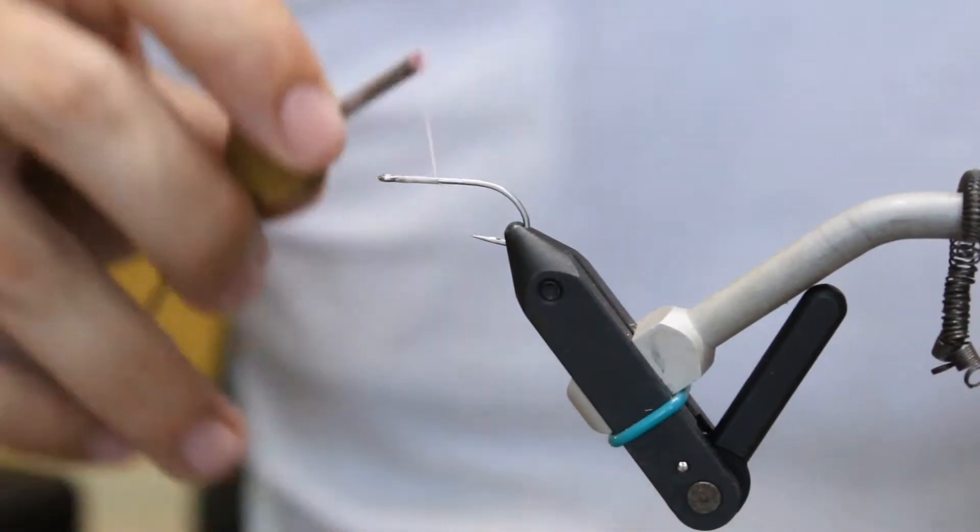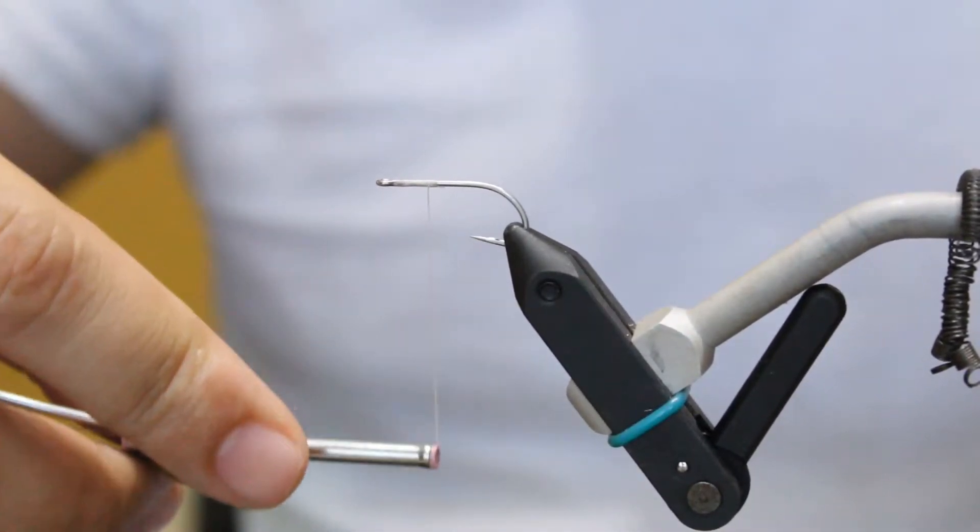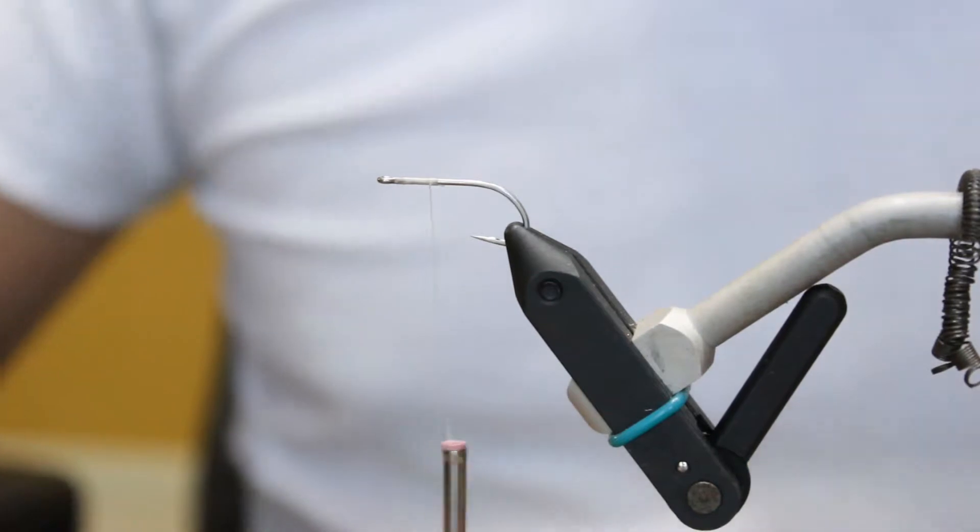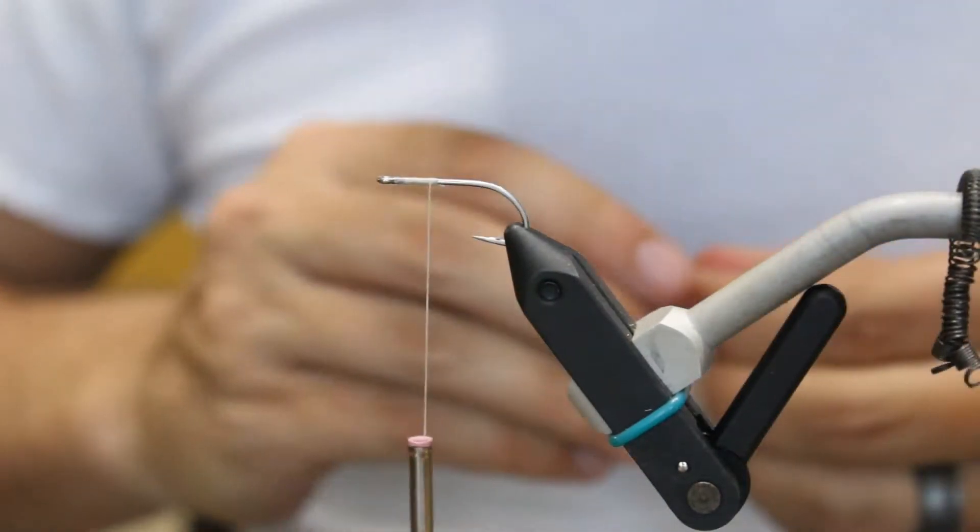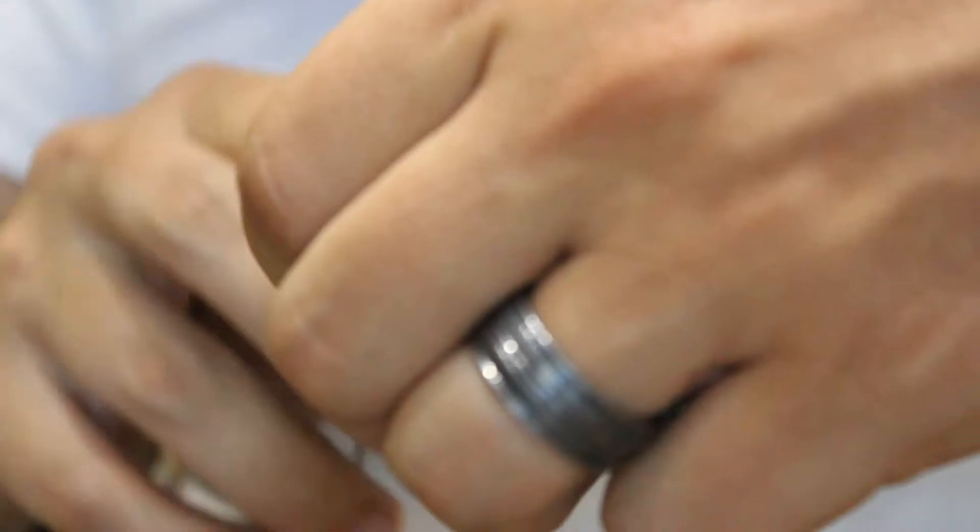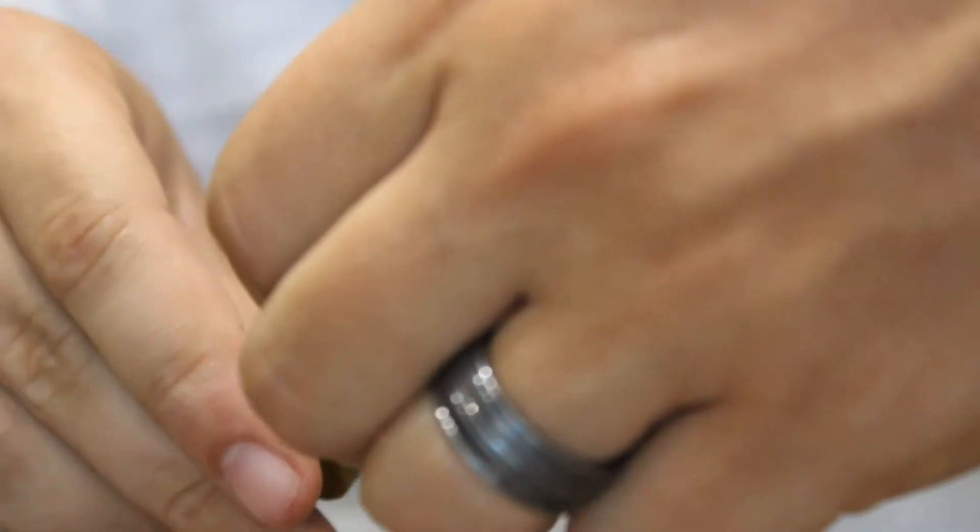So first thing you're gonna do is come up to about a quarter of the hook. You don't have to wrap all the way back. You're going to get your bead chain eyes and you're going to capture them onto the hook.